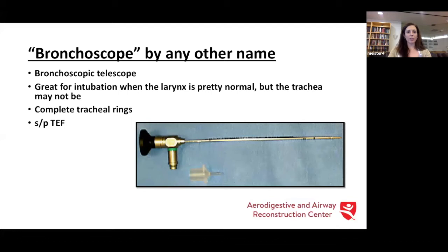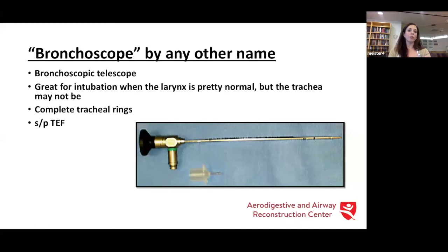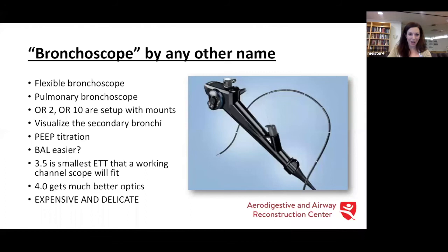This is a bronchoscopic telescope — the same telescope more or less used in a rigid bronch, but without the full bronchoscopy setup. Your instrumentation is very limited. It is great for intubation when the larynx is pretty normal, but either the trachea or the supraglottis may not be. In children who have complete tracheal rings, we're going to visualize the trachea. Children who are status post tracheoesophageal fistula repair, or evaluation of initial tracheoesophageal fistula — you want to put the endotracheal tube in a specific position. Children who have Pierre Robin — where you want to navigate that cleft palate and glossoptosis with a rigid instrument — this is a great tool. So you can visualize but not necessarily instrument, except for intubation.